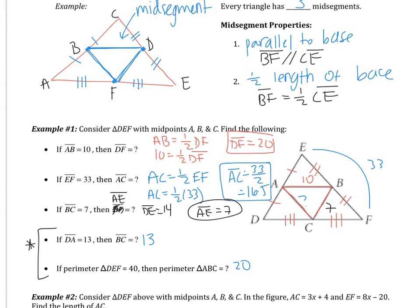13 for the similar reason as the bullet point before. And then for the last one, if the perimeter of DEF is 40, the perimeter of ABC is 20. All of the sides of the smaller triangle are going to be half. So if all the sides are half, then the perimeter is going to be half.